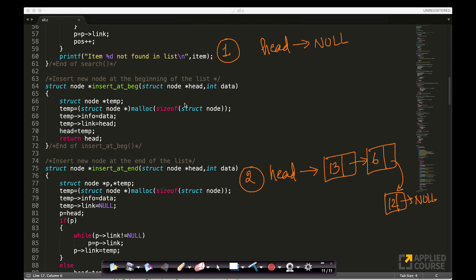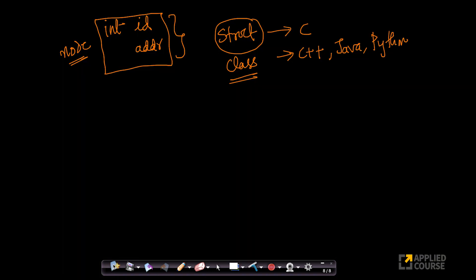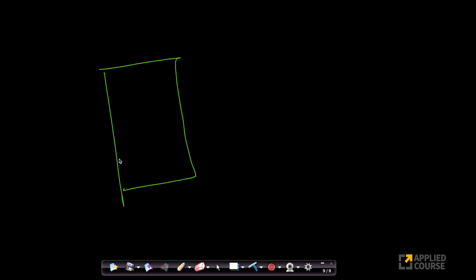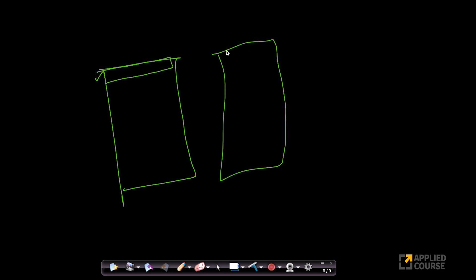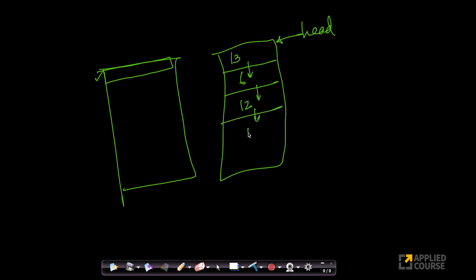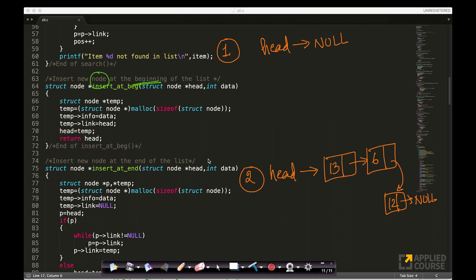If I want to insert a new node at the beginning — this is important. Suppose I want to insert a new node at the very beginning of the list or playlist. My playlist could be empty, and I want to add something here at the very beginning — that's one case. The second case is my playlist already has three songs: song 13, song 6, and song 12. If I want to add something at the very beginning, this is where my head is pointing to now. The code here is very, very straightforward.